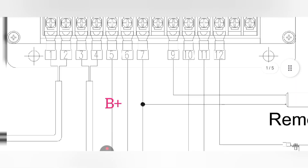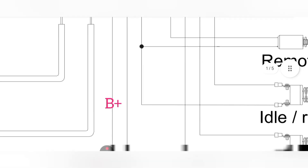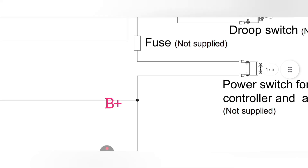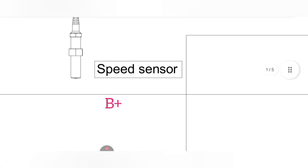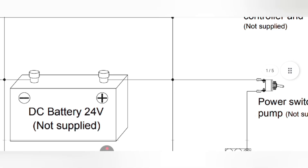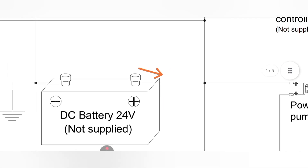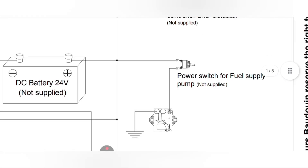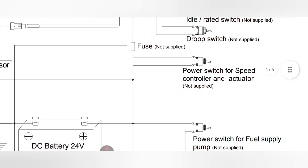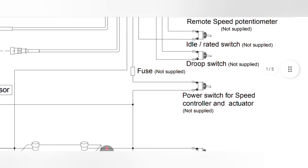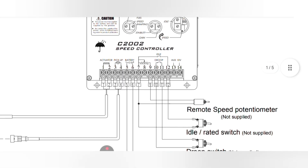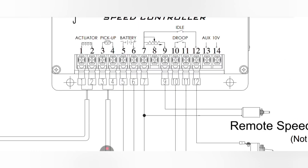Following pin number six, the wire goes through a fuse, then a toggle switch, and splices with another wire. Tracing that splice wire down, it connects to the battery positive post. Here we have toggle switches for the fuel pump supply power, the speed controller, and the actuator. In simple terms, this is the battery input supply to the controller.